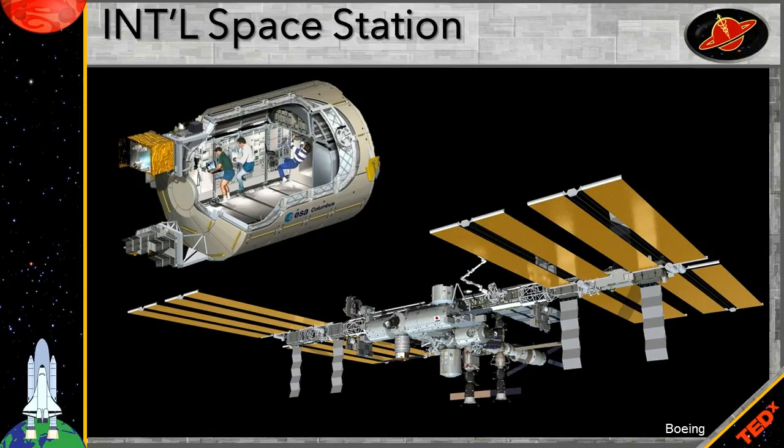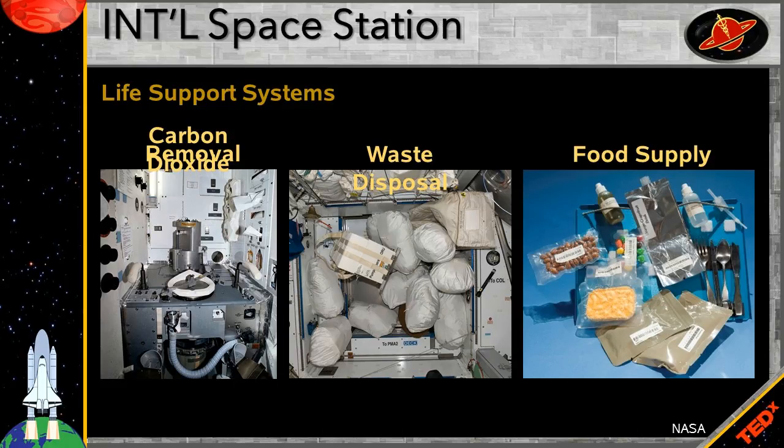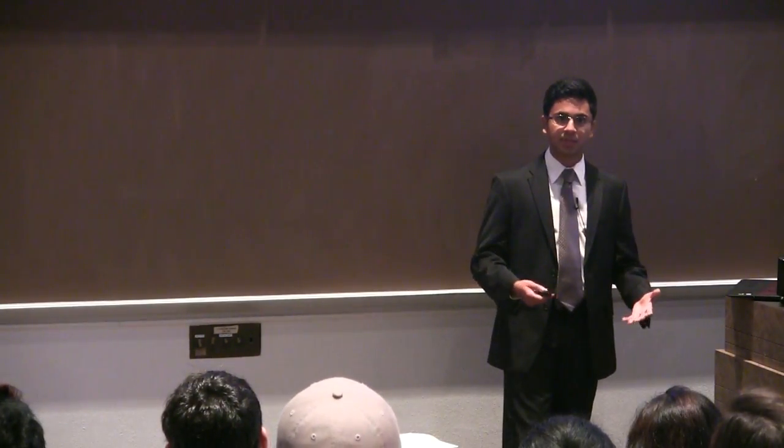And on the inside, if you're researchers, you're probably working in a module that looks something like this. So some of the main life support systems that you should familiarize yourself with are the carbon dioxide removal, waste disposal, and food supply, among a bunch of other systems like fire safety. So these all are the mechanical things that ensure the safety and the well-being of the crew.